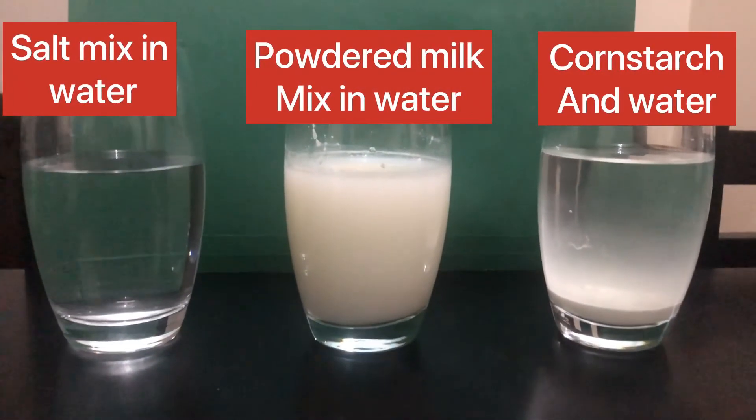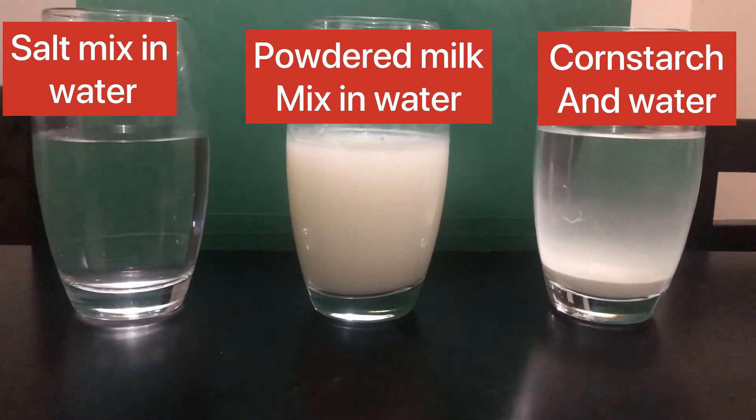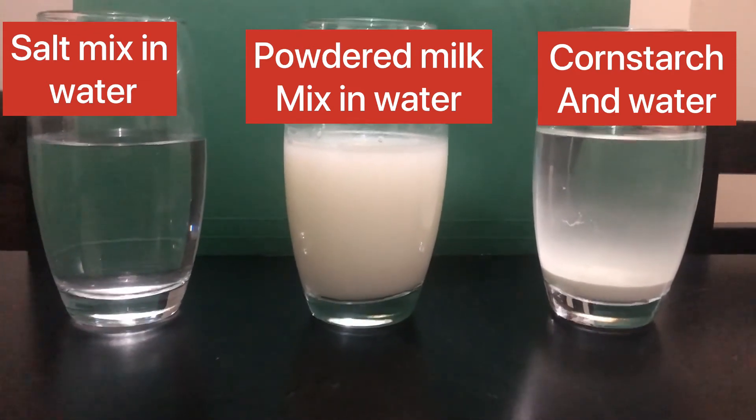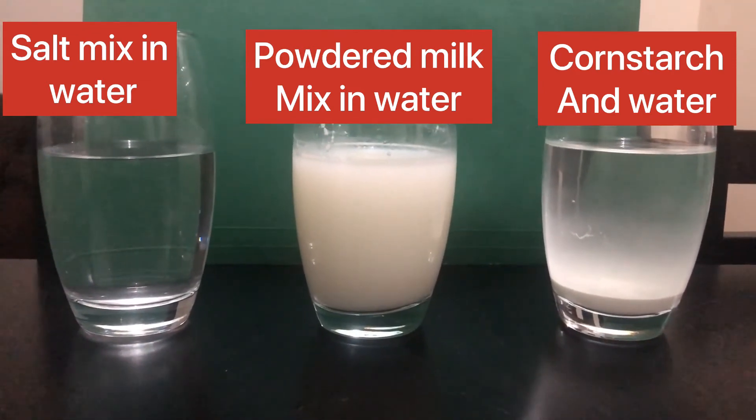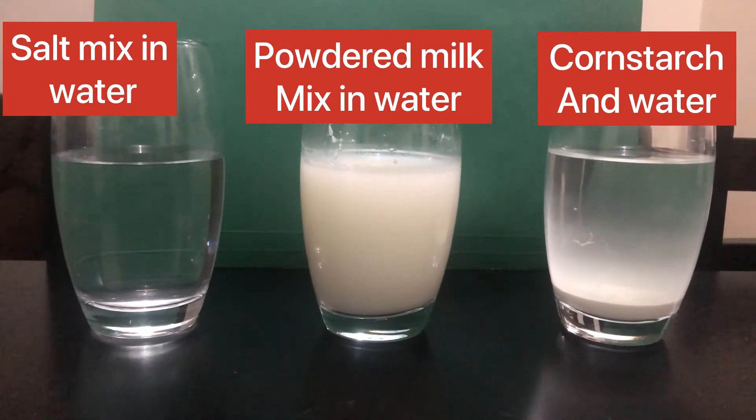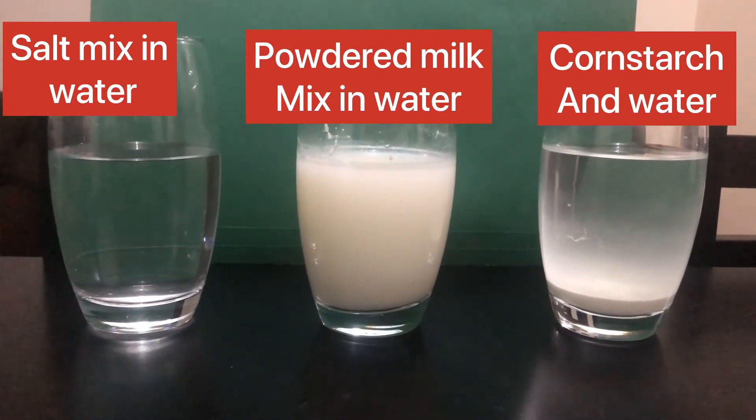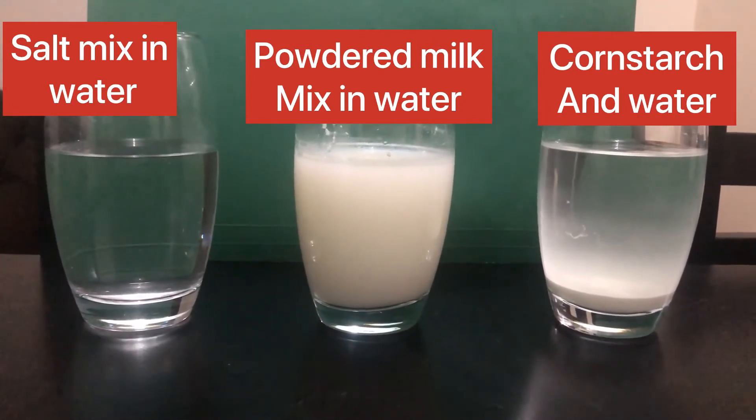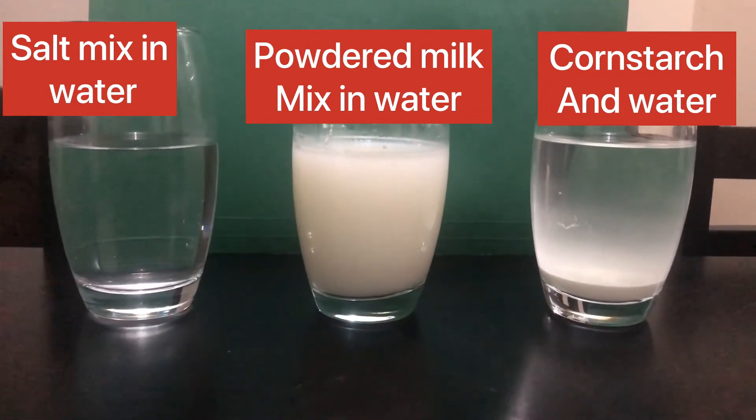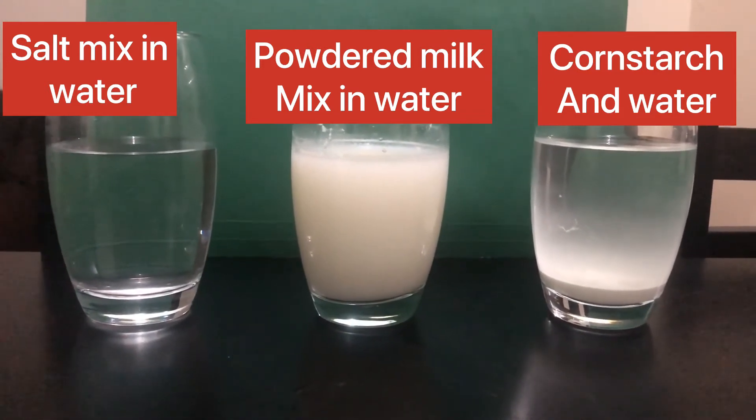Look at the sample of mixtures here. How do they differ from each other? In the first sample of mixture, it has a uniform appearance. One phase is visible. That is because salt dissolves in water.